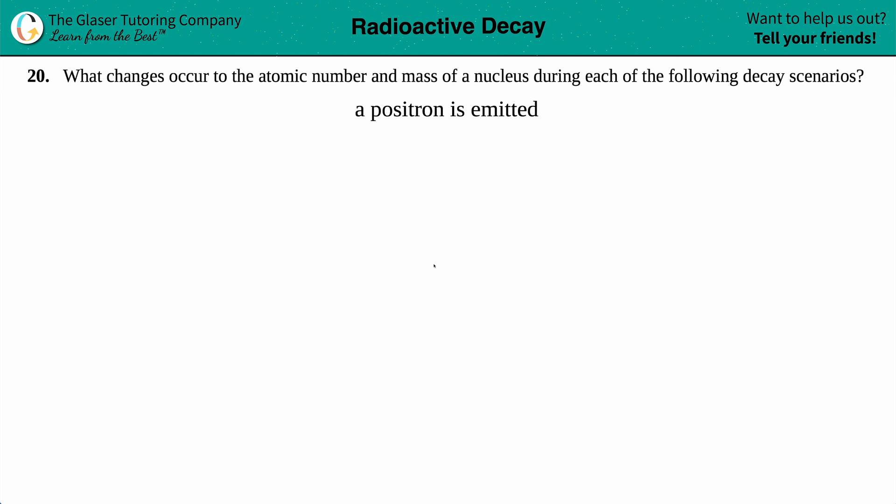Number 20. What changes occur to the atomic number and the mass of a nucleus during each of the following decay scenarios? And then we have a positron being emitted.